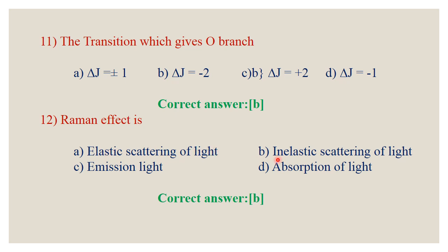Question number 12: Raman effect involves inelastic scattering of light, where the frequency of the incident light is different from the frequency of the scattered light. Due to the Raman effect, ν_R = ν_I − ν_S. The correct answer is B, inelastic scattering of light.